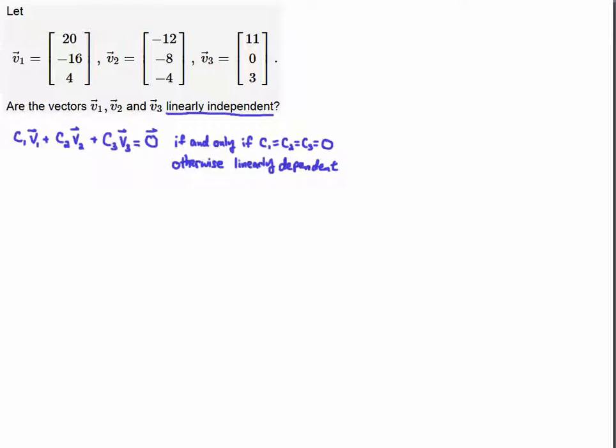Alright, so first thing I'm going to do is write down the definition of linear independence. It says if we take a linear combination of these three vectors and set it equal to the zero vector, then these vectors are linearly independent if and only if c1 equals c2 equals c3 equals zero. That means the only way you can get a combination of these three vectors to be zero is if you multiply each of them by zero. Otherwise we say that the vectors are linearly dependent.